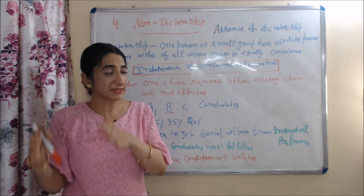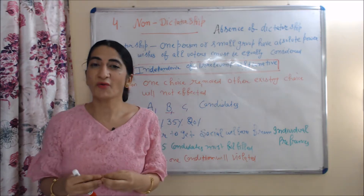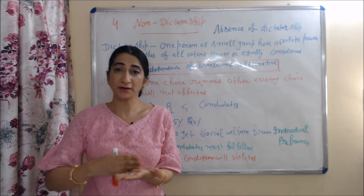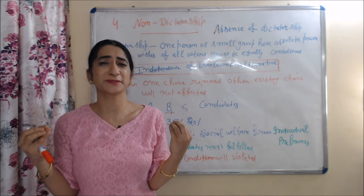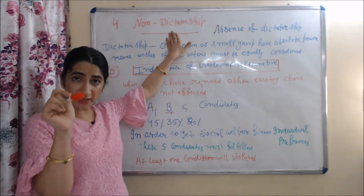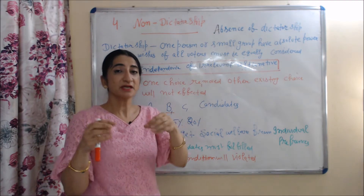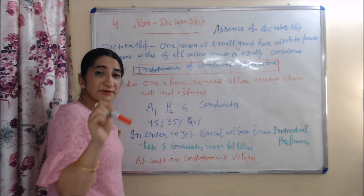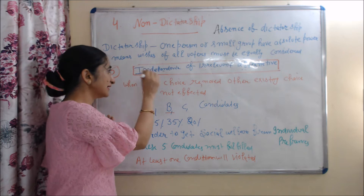The next condition is non-dictatorship, which means the absence of dictatorship. Dictatorship means when one person or a small group has absolute power. According to this condition, there must be an absence of dictatorship, meaning the wishes of all voters must be equally considered.